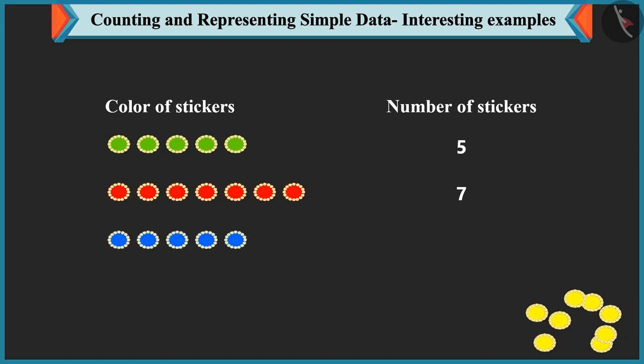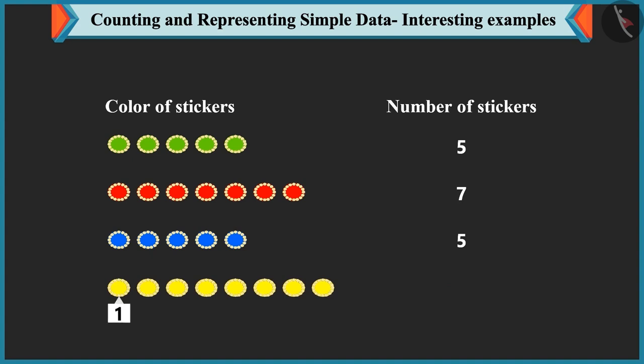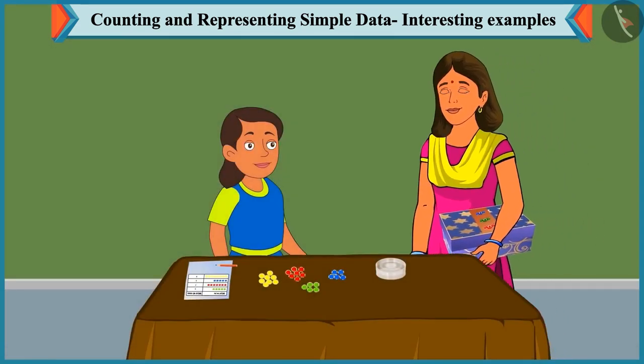There are one, two, three, four and five blue stickers. So, we have to write five against blue stickers. And there are one, two, three, four, five, six, seven and eight yellow stickers. So, we have to write eight against yellow stickers.